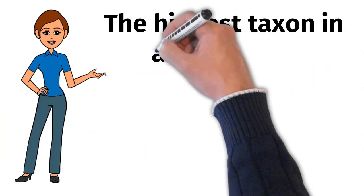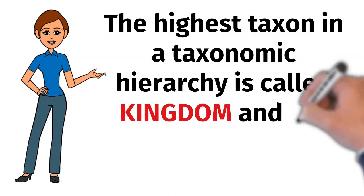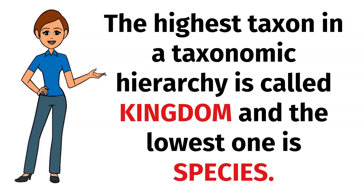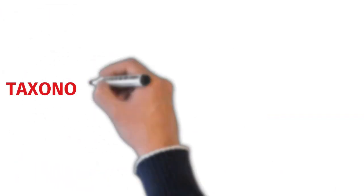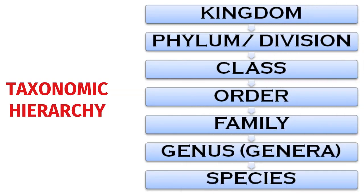The highest taxon in a taxonomic hierarchy is called kingdom and the lowest one is species. The different taxa or ranks in a taxonomic hierarchy from higher to lower are as follows: the highest taxon is kingdom, the next taxon lower to it is phylum in case of animals and division in case of plants. Next it follows class, order, family, genus or genera, and species in decreasing order, with species being the lowest among all.